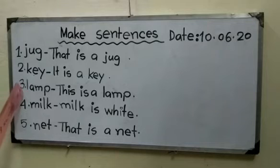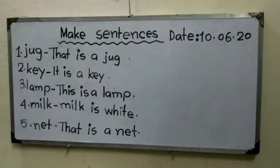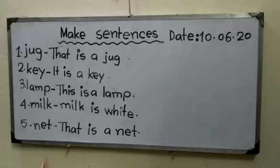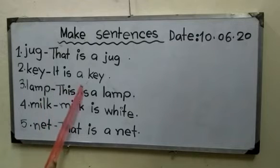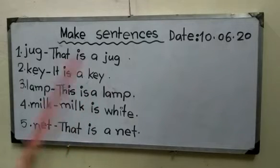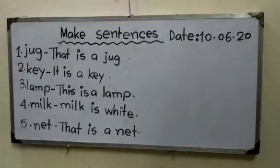Number 3 - Lamp. Lamp - what is the meaning of lamp? Lamp means Bati. This is a lamp. Eta hai ekti bati. Okay, next.